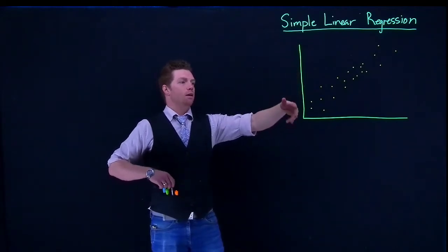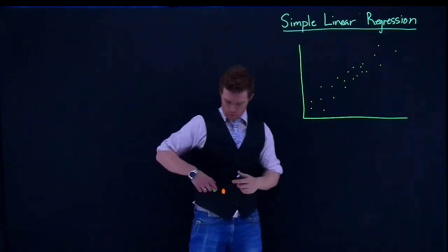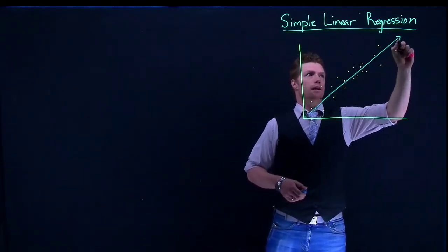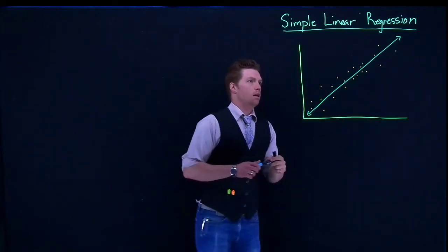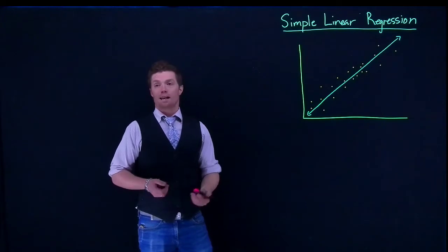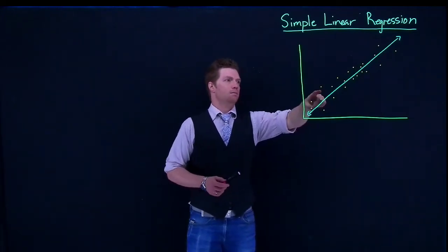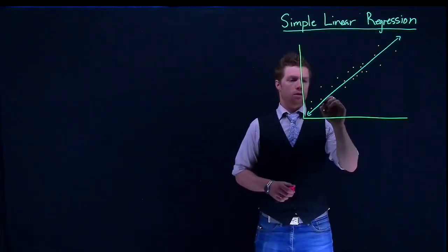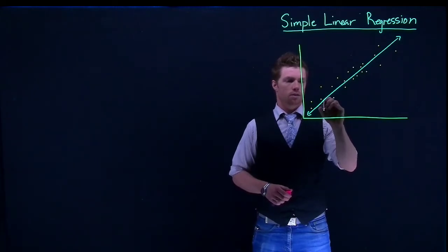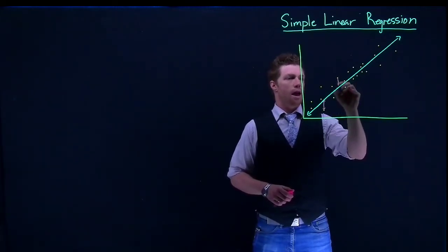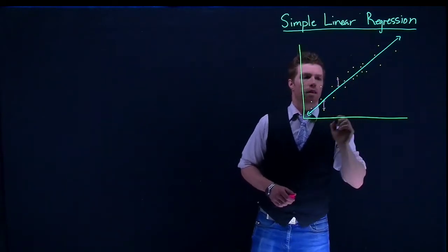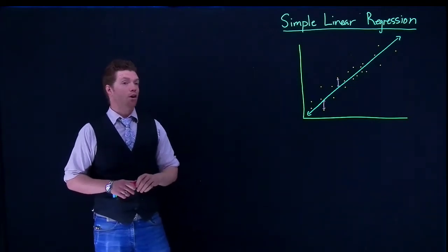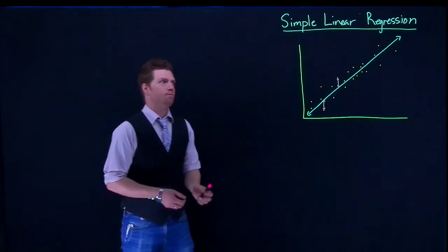Suppose that we have some scatter plot for our regression analysis and we've got our line of best fit. If you notice, none of the points actually land exactly on the line — sometimes they do, but most of the time they don't. A residual is the distance between the actual points and the line. It can also be termed as the errors — how far off our prediction was from the actual measurements.